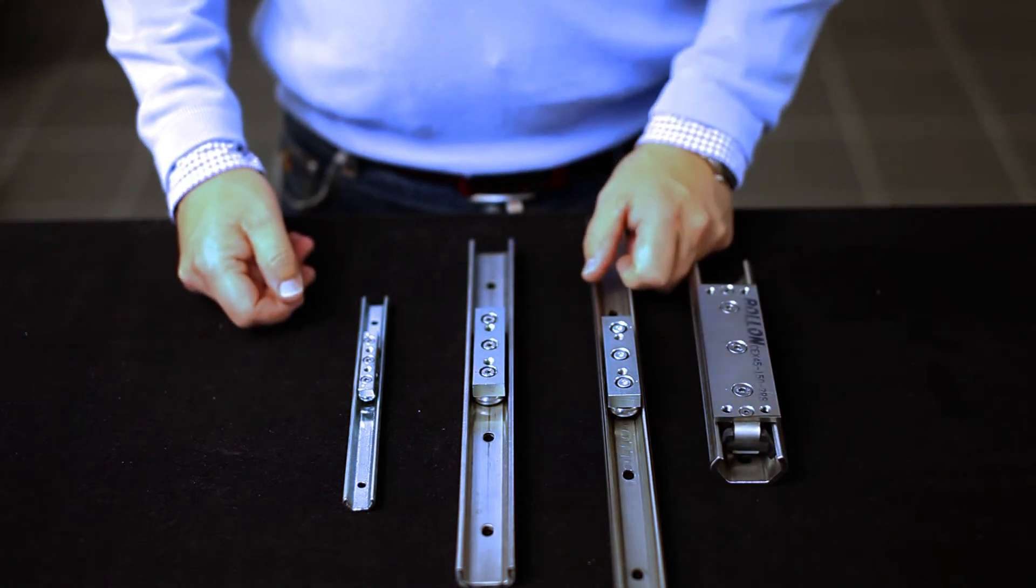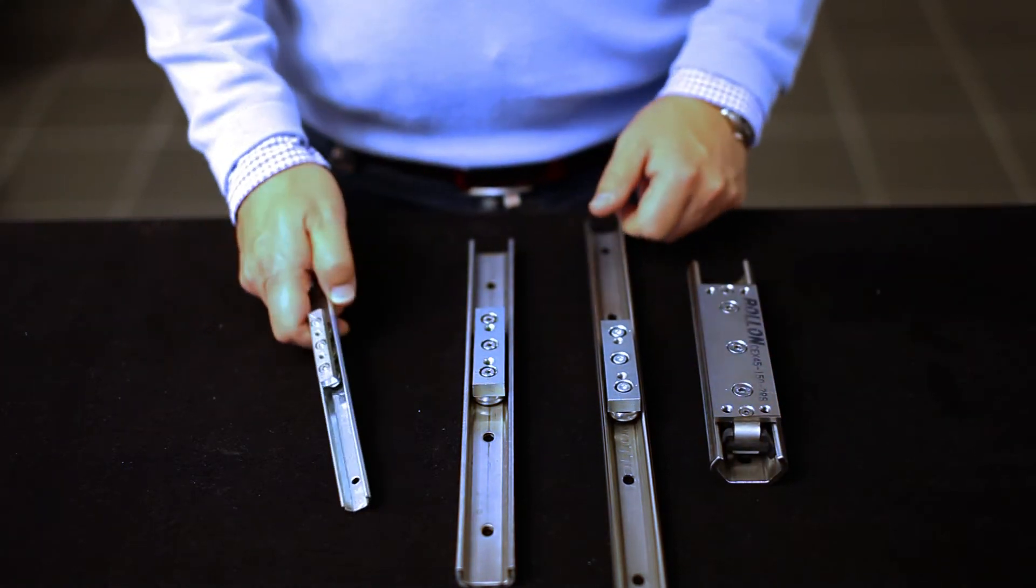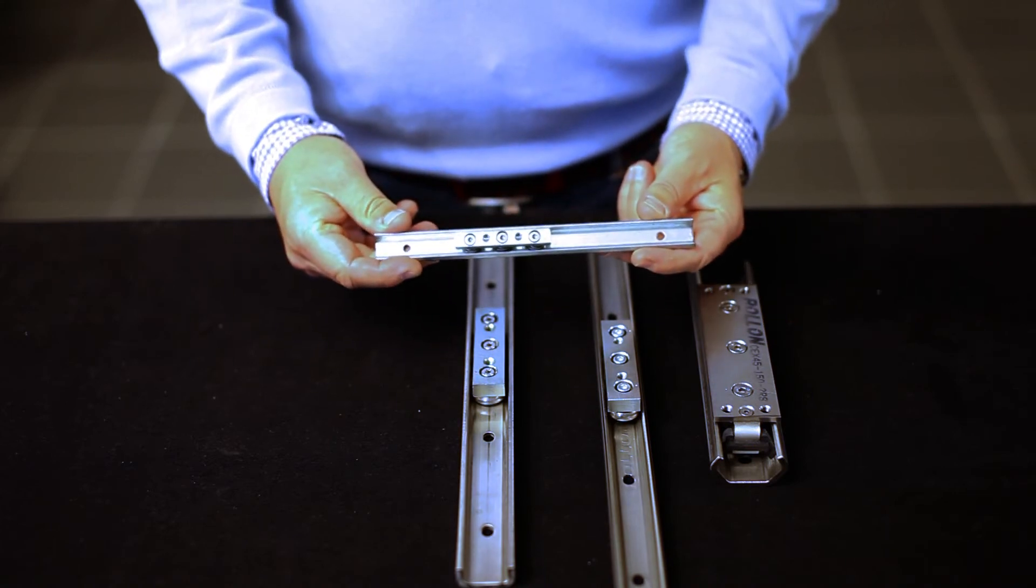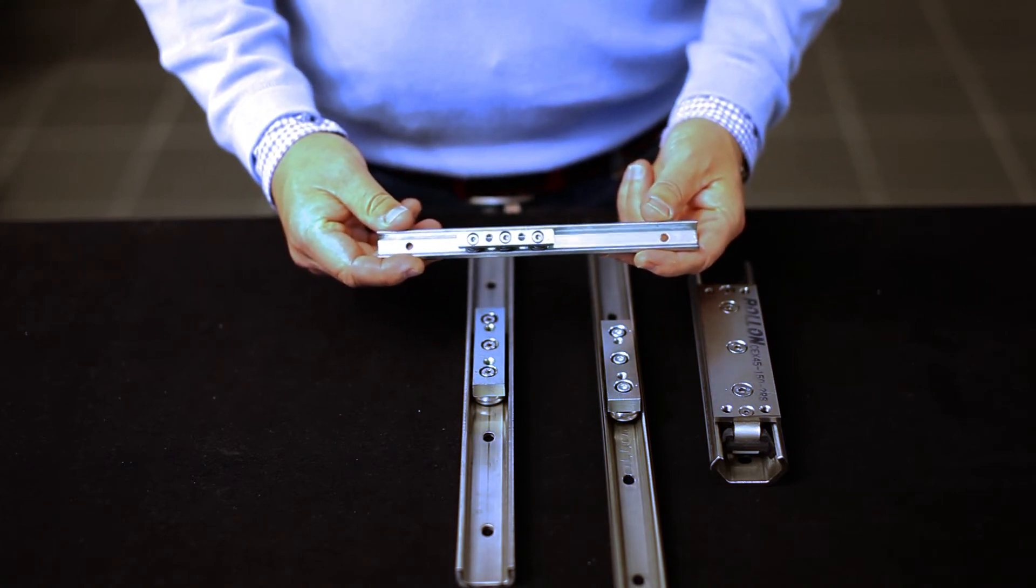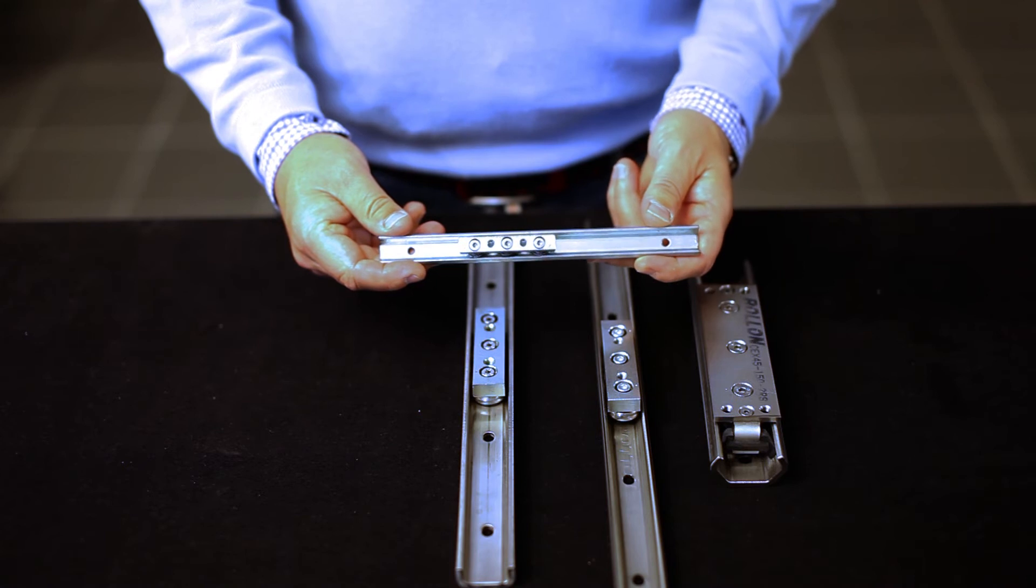C-Rails are also available in zinc plated version, used for applications without requirements for corrosion protection.